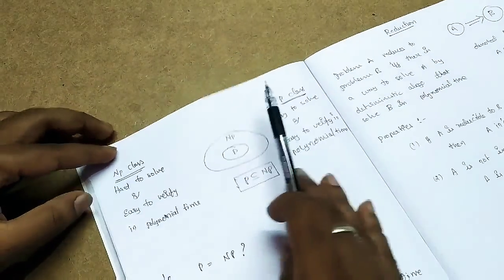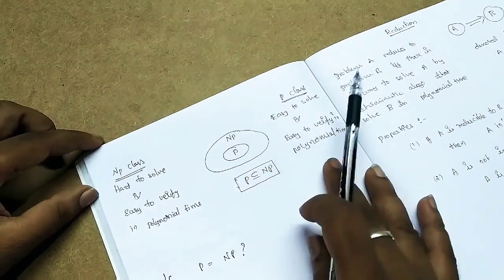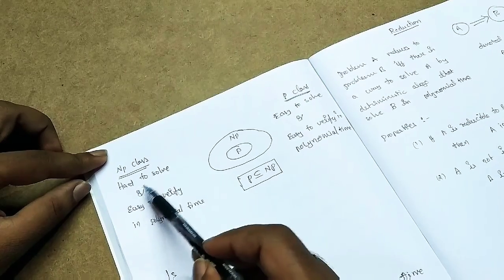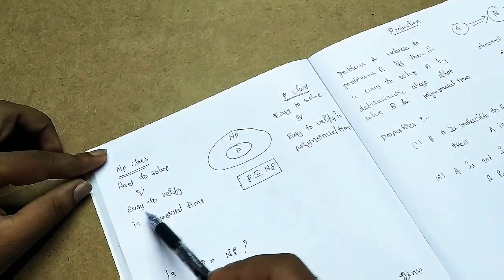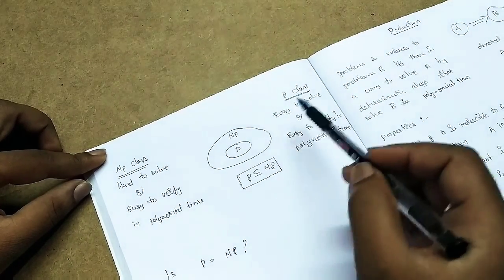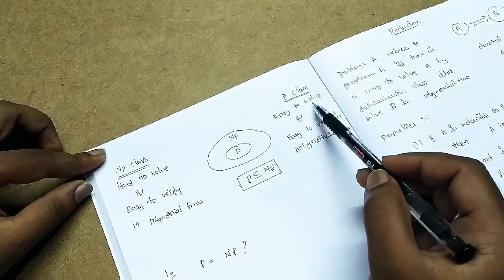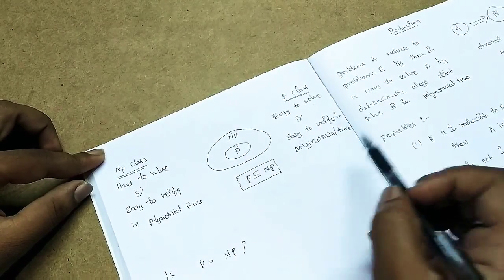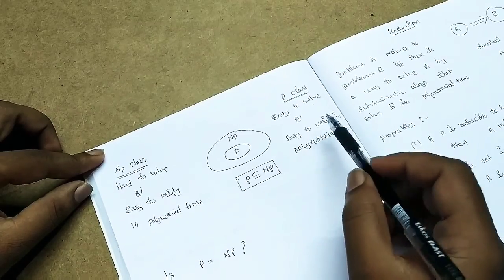What is the relation between P and NP class? NP class problems are hard to solve in polynomial time but easy to verify in polynomial time. P class problems are easy to solve in polynomial time and also easy to verify in polynomial time.